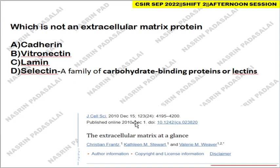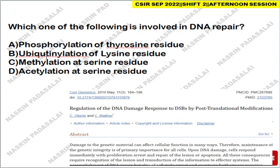Next: which of the following is NOT an extracellular matrix protein? The correct answer is selectin. Cadherin, vitronectin, and laminin are all extracellular matrix proteins. Selectins are not ECM proteins — they are a family of carbohydrate-binding proteins also called lectins. Vitronectin is an ECM protein present in the brain, and laminin and cadherin are also ECM proteins.